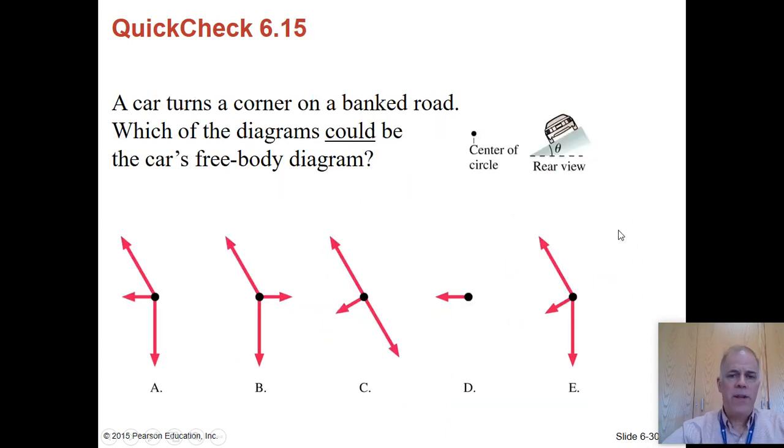Free-body diagram for a car going around a banked turn. Here's the answer. It is this one. So gravity always acts straight down. That is the downward component here. Normal force is always perpendicular to the surface that produces it. So that's this one here. And friction is always parallel to the surface that is encountering it. So it has to be aligned with the tilted road here.